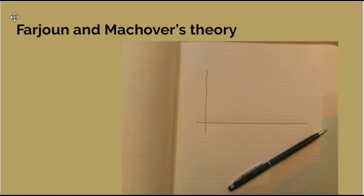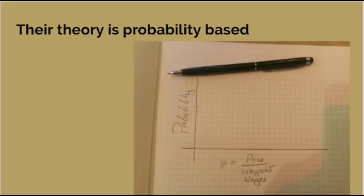Farjoun and Machover give a statistical argument, and rather than deal with formulae, I'm going to show it using a simple graphical diagram. I start off by drawing an xy-axis. The vertical axis is the probability of something occurring, and the horizontal axis is the ratio between the price of something and the integrated wages required to produce it. The integrated wages are the wages required to produce it directly, and then the wages of all that were required to produce all its components — very similar to labour contents.